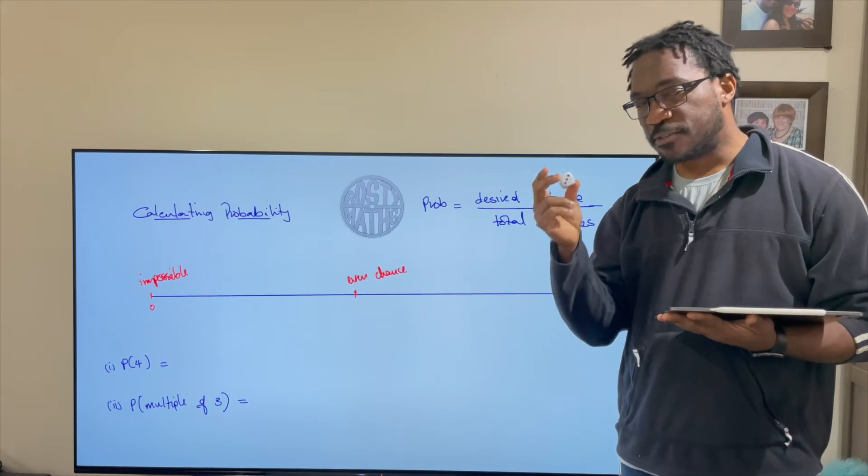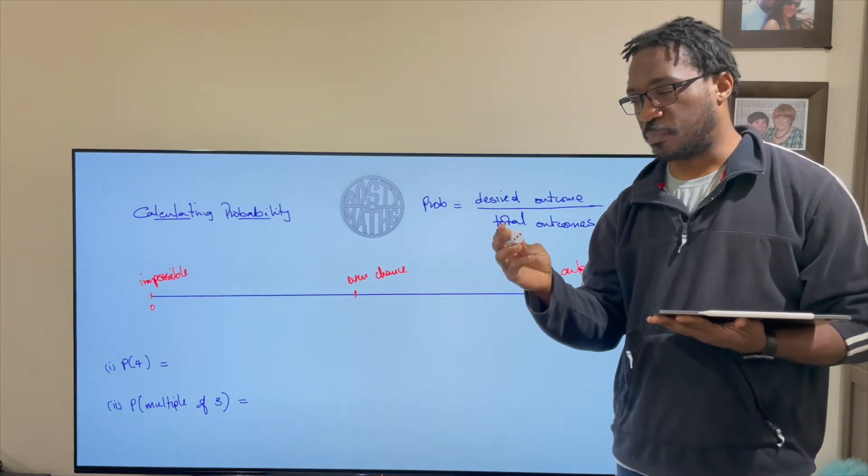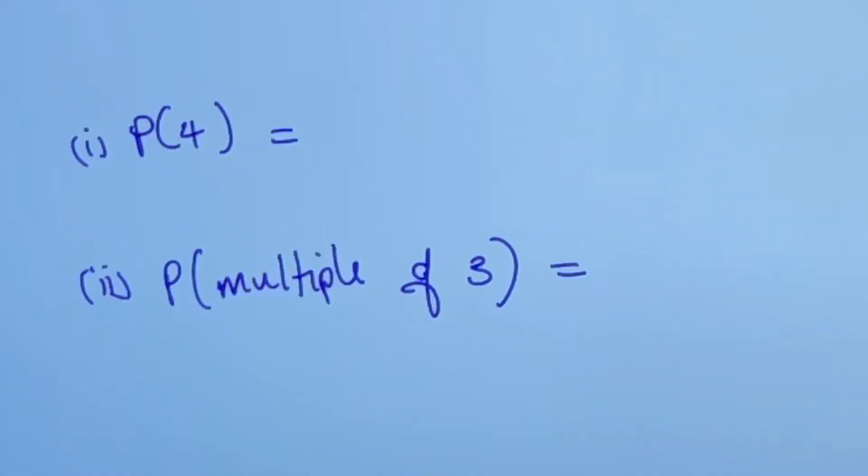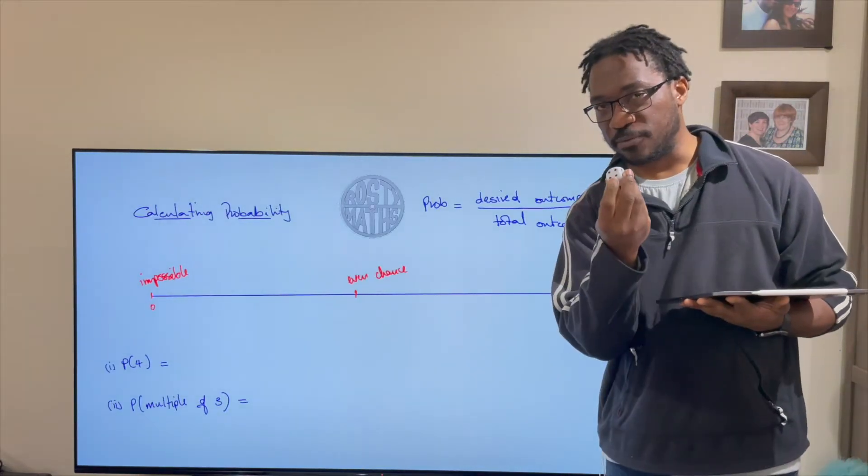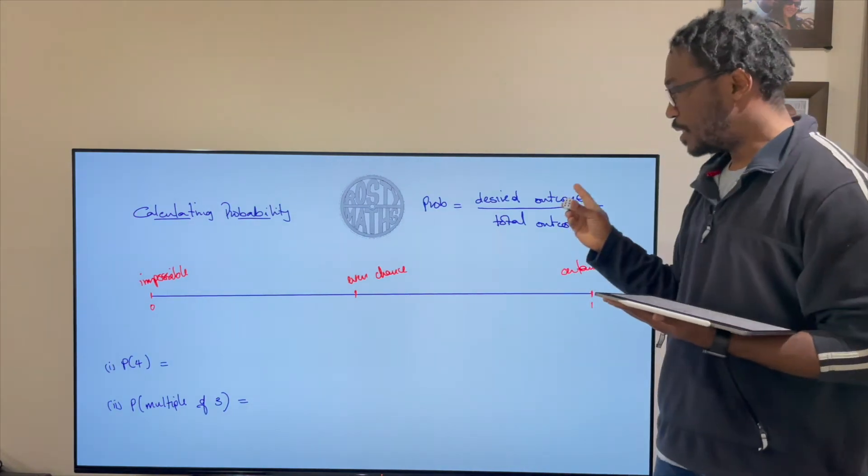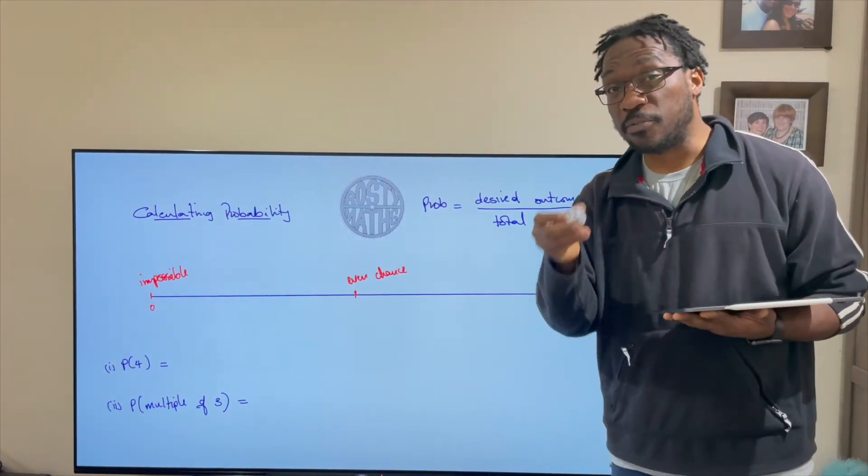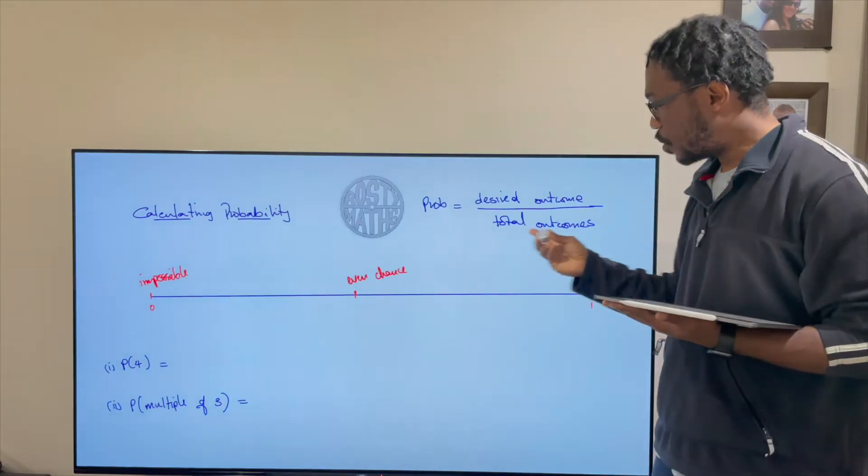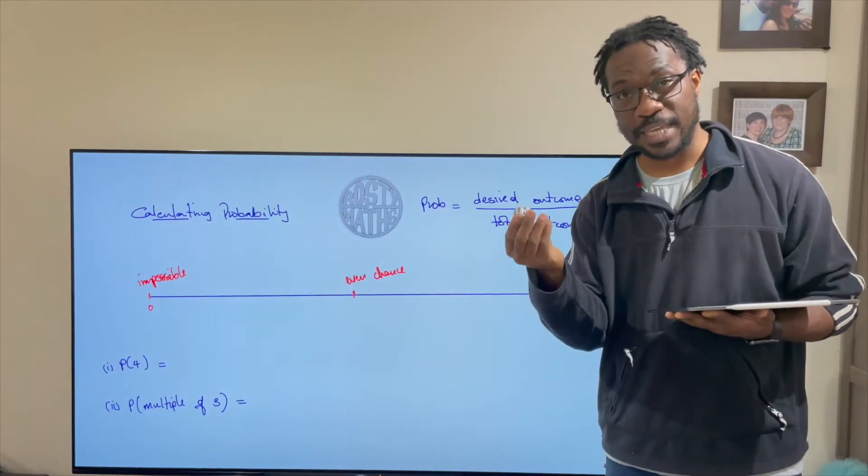And if it's fair and you want the probability of anything, for example I need to find the probability of getting a four. Well there's only one four on here but there are six sides so the desired outcome what I'm looking for is a four but the total outcome would be six.